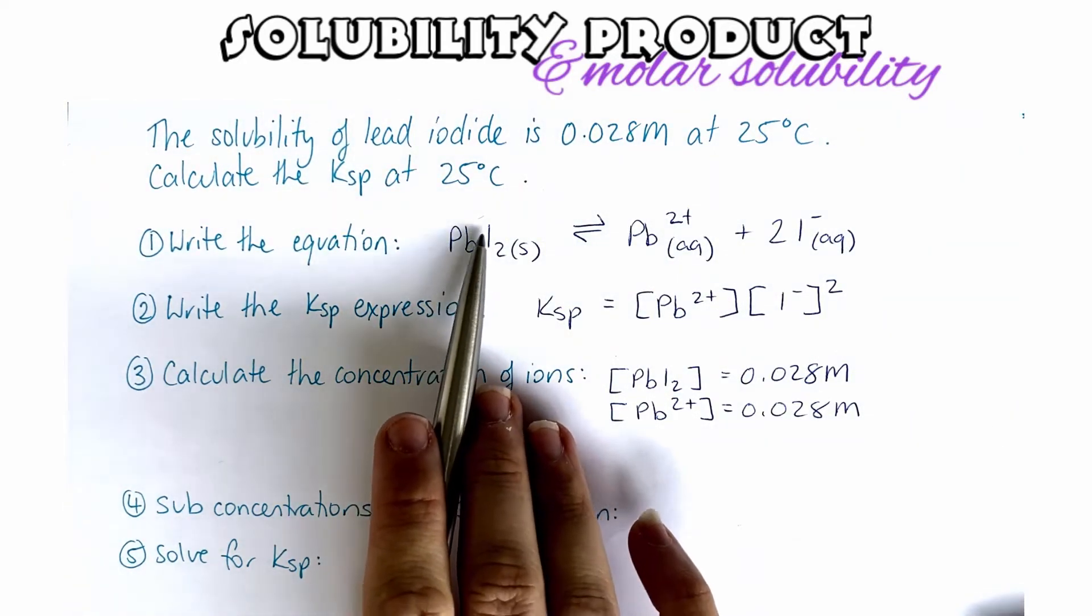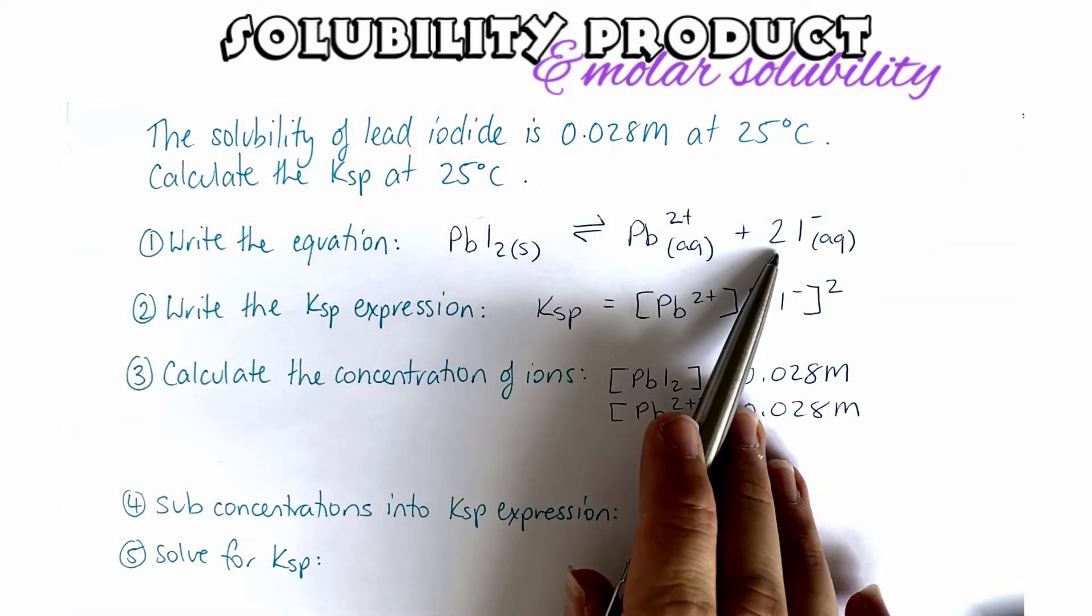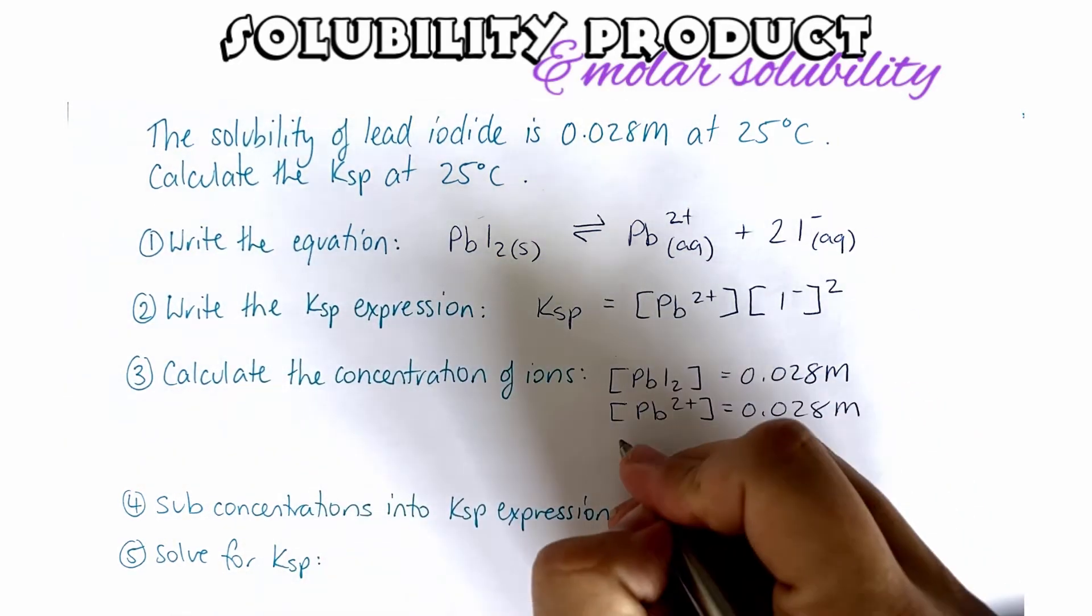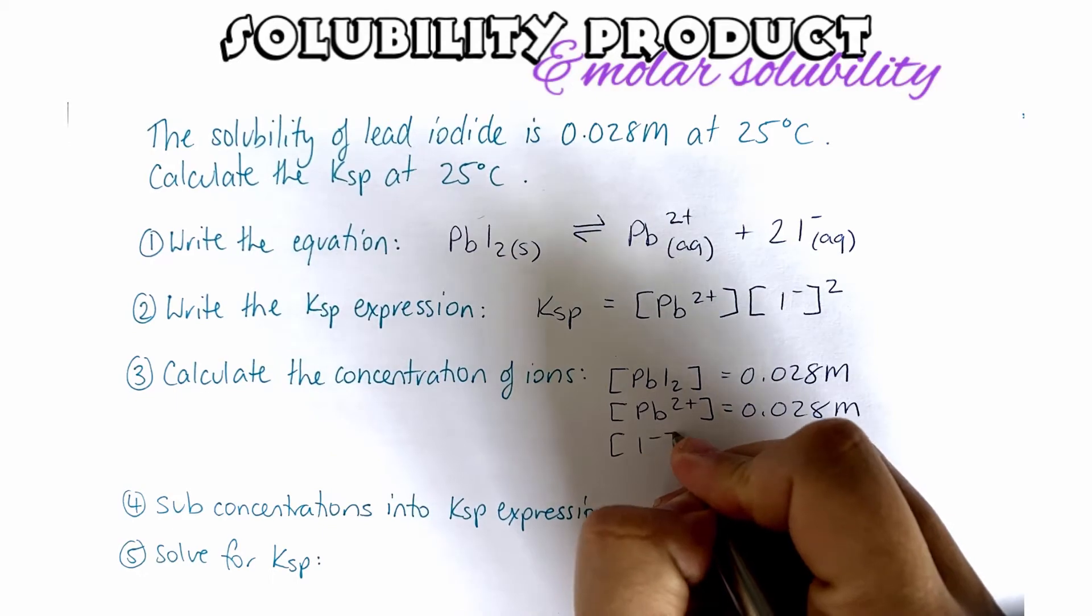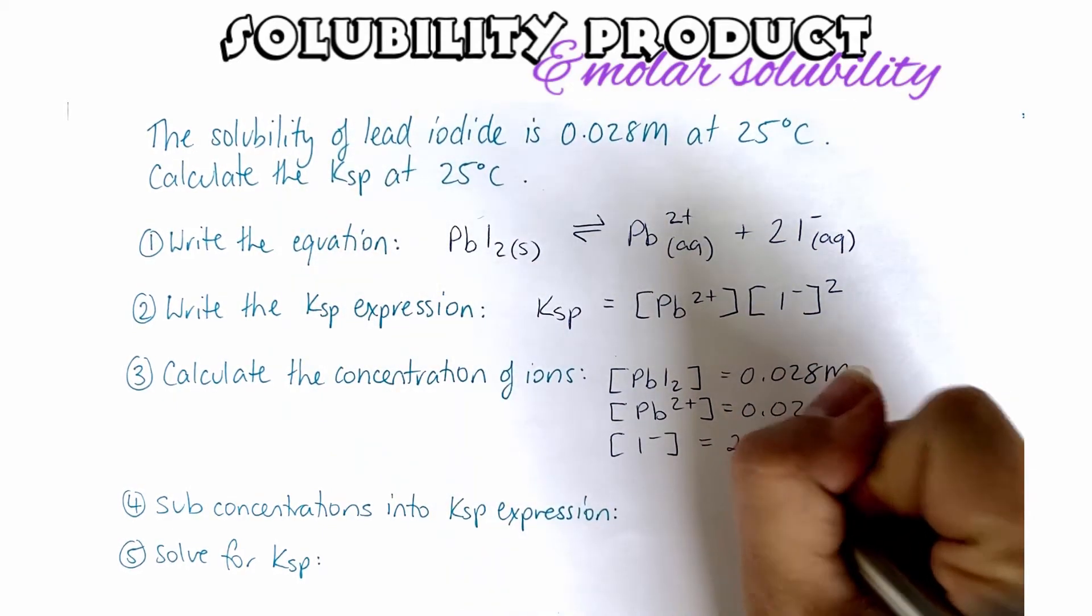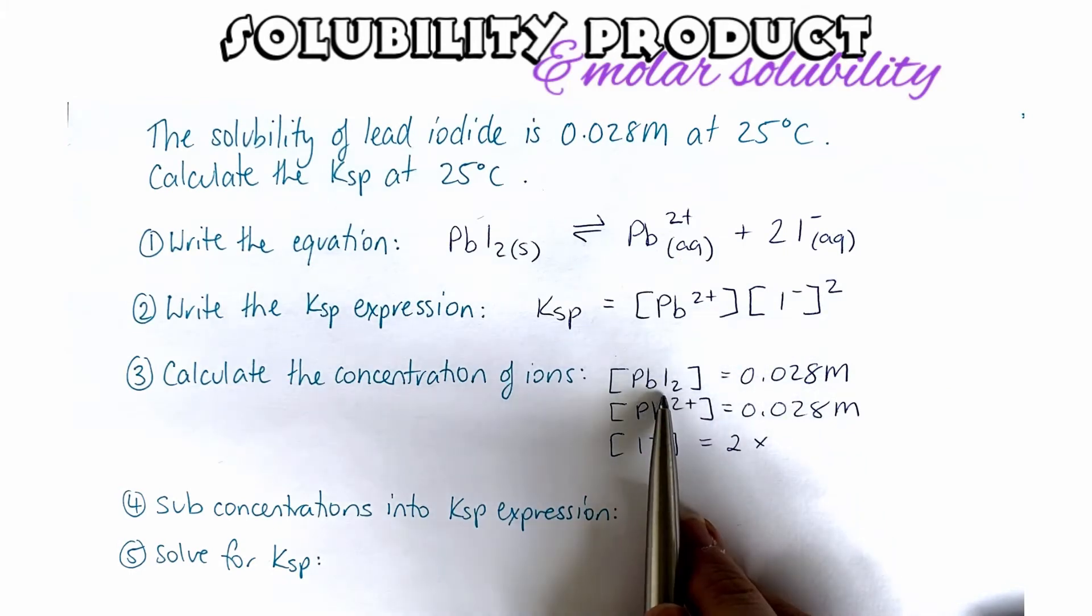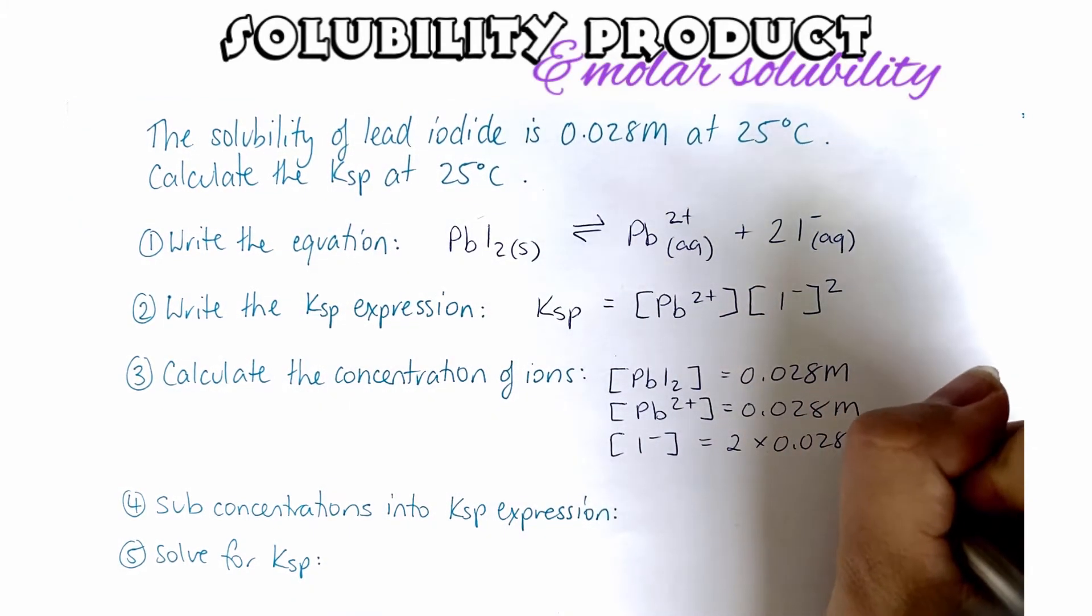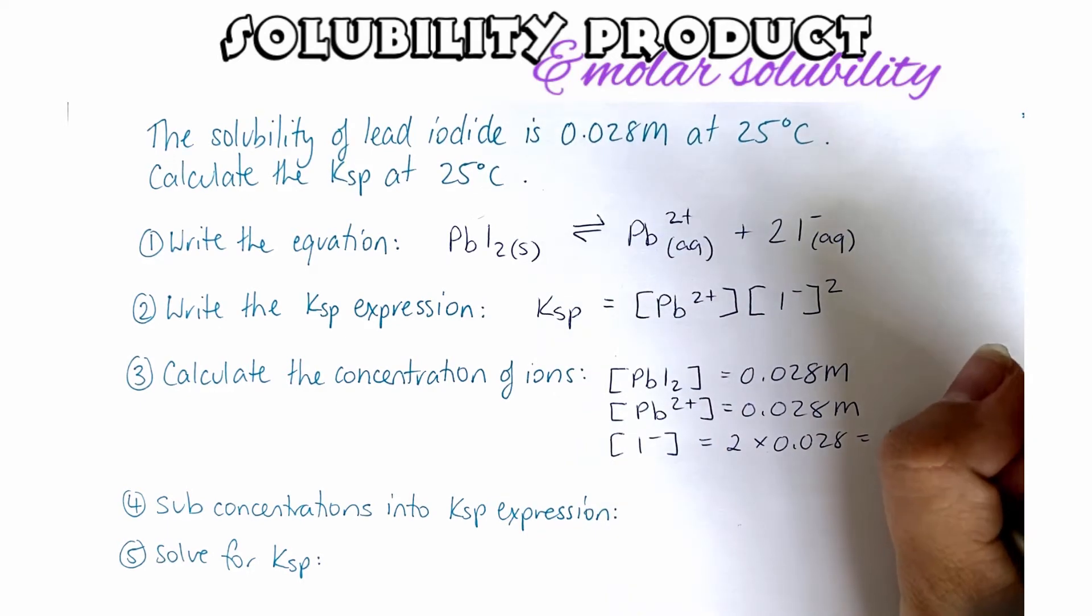The ratio from our lead iodide ions is 1 to 2. So that means that our concentration of our iodide ions is going to be 2 times the amount of the lead iodide, so 2 times 0.028, which is going to give us the value of 0.056 molar.